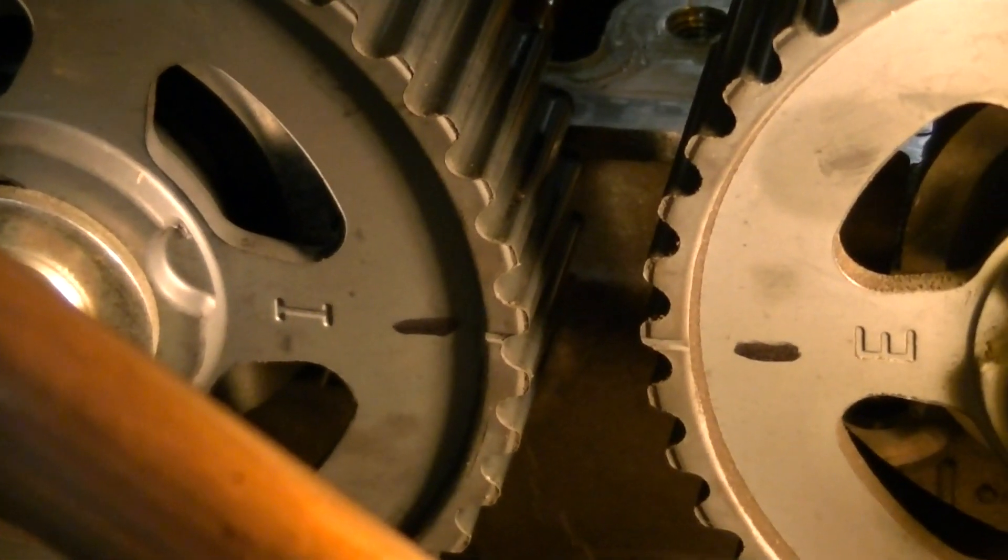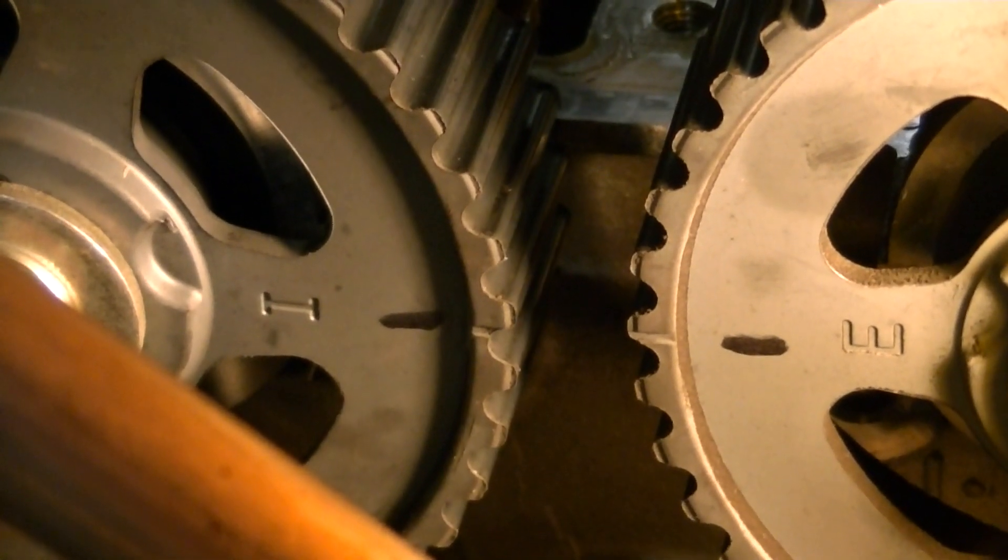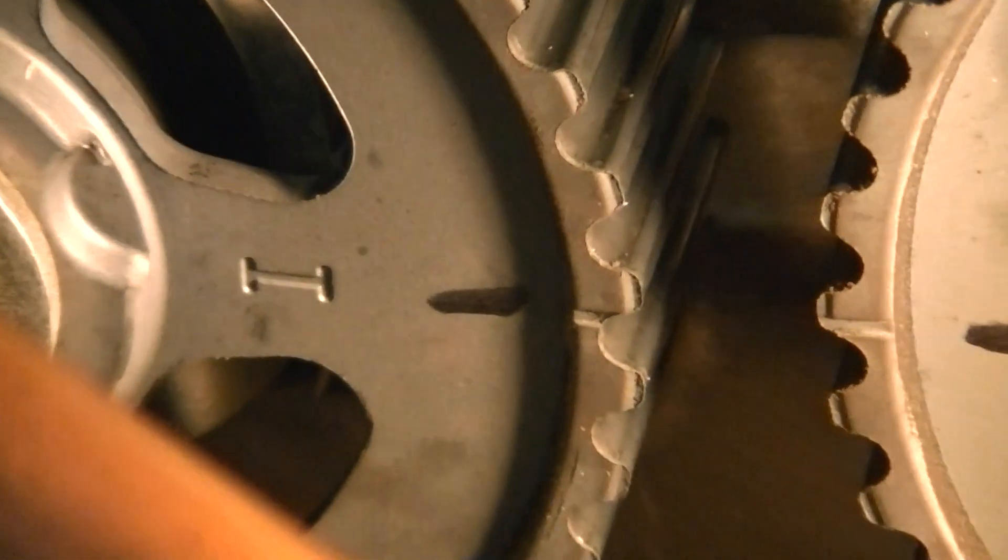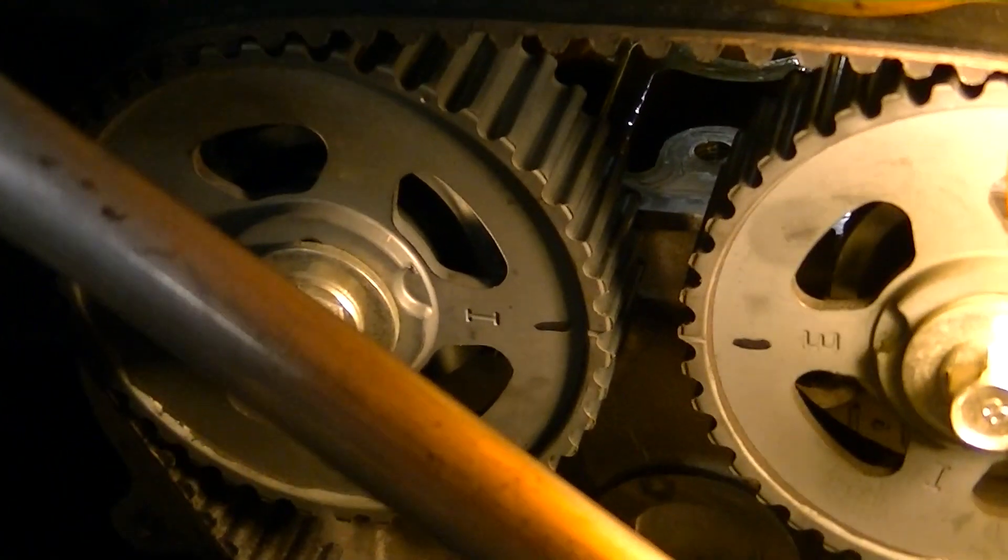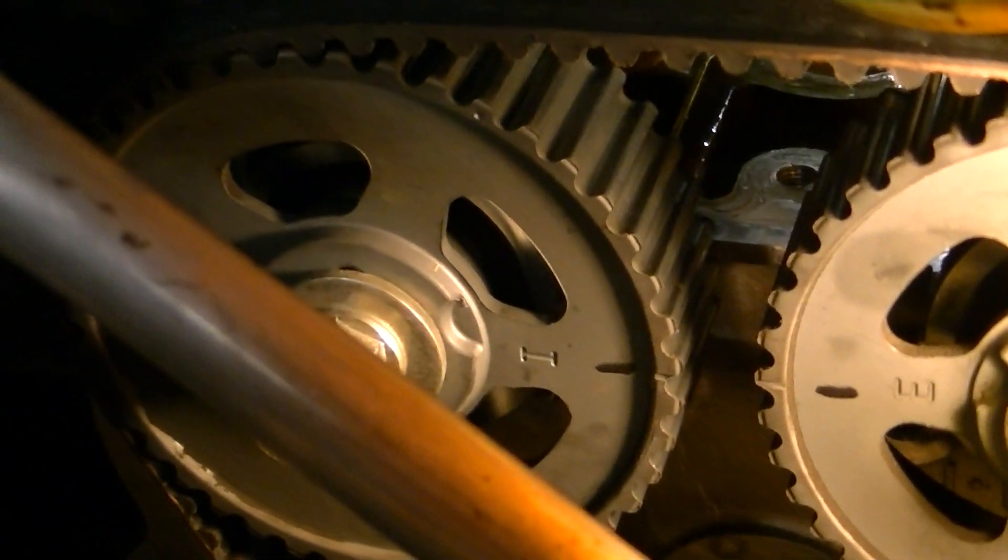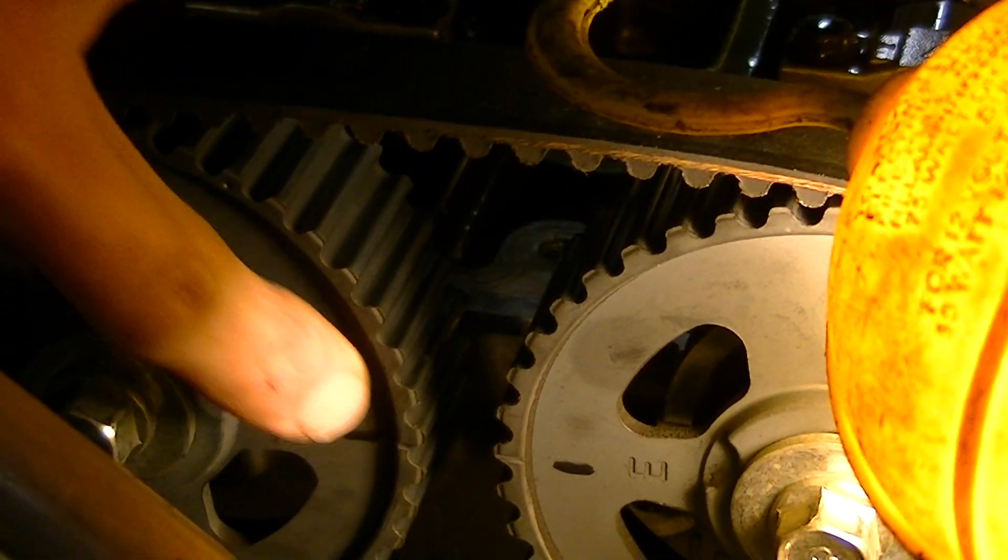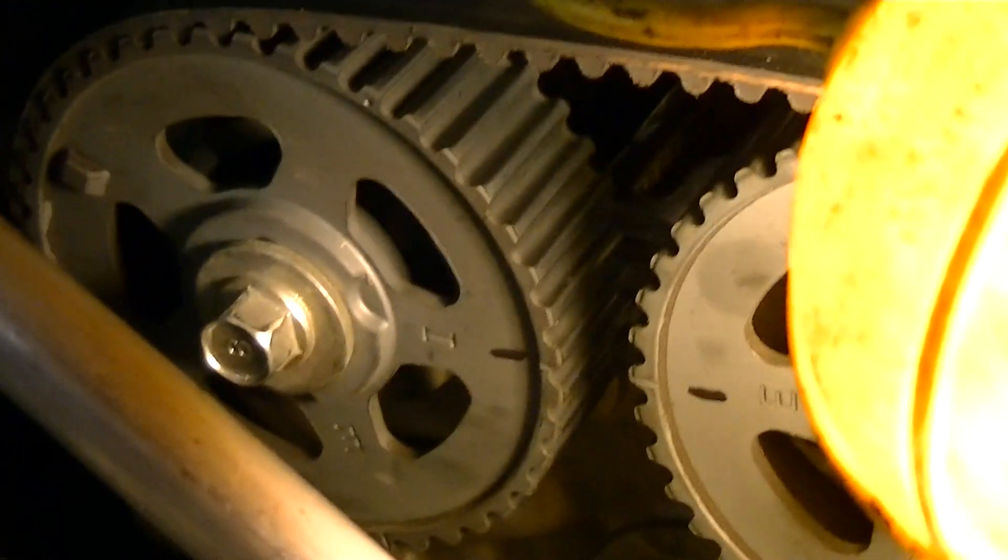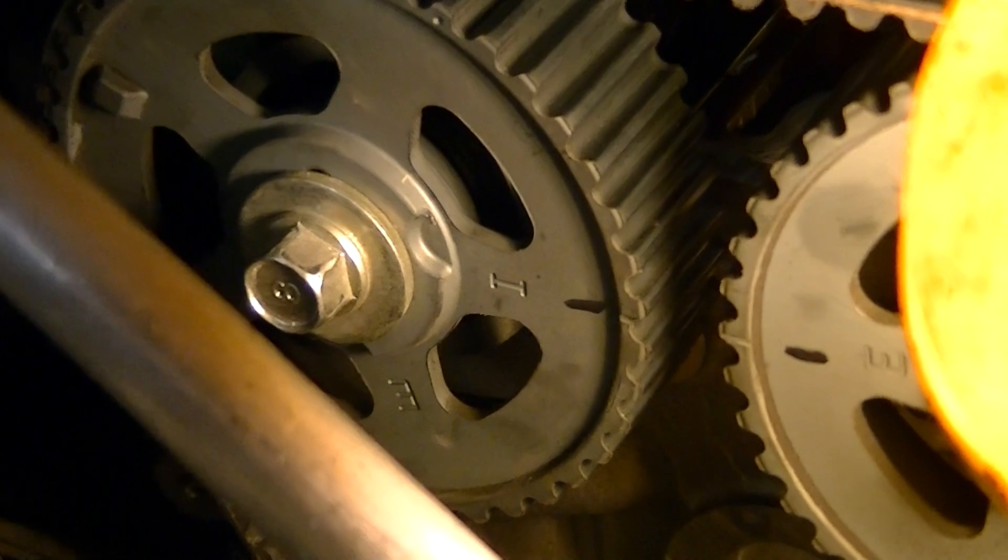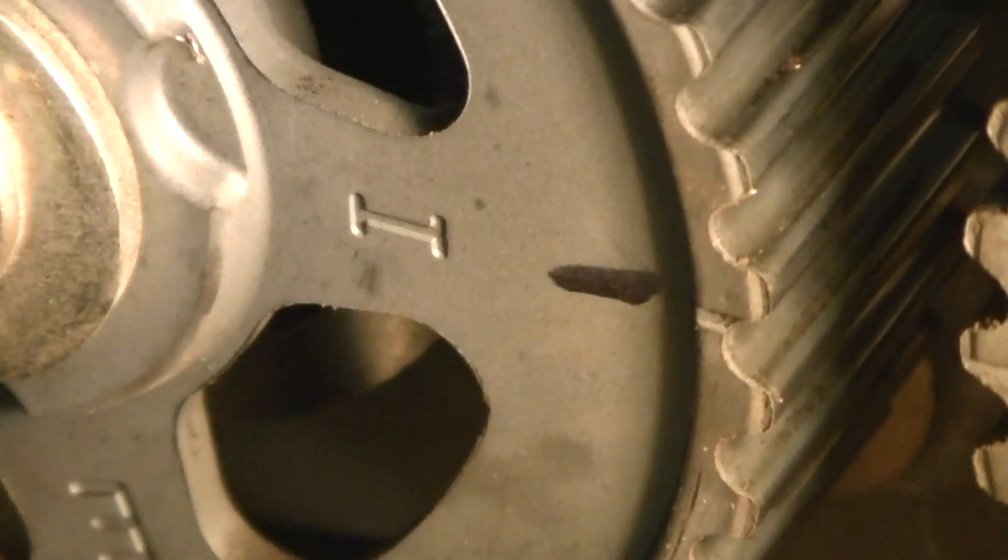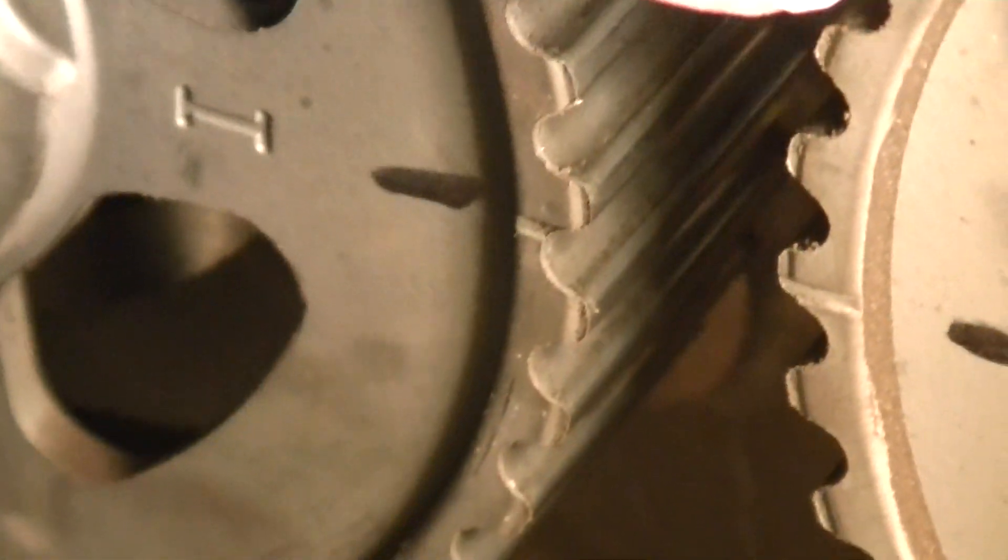You want the intake cam, this little groove here. These cam sprockets are universal so they will have an I and an E with a corresponding mark there. But on the intake camshaft towards the rear of the car, you only want to pay attention to the I and its little groove right there on the edge of the sprocket.